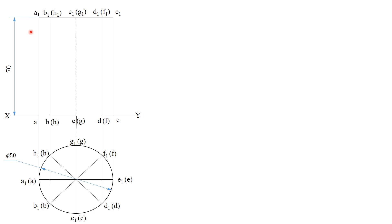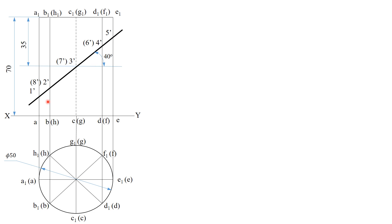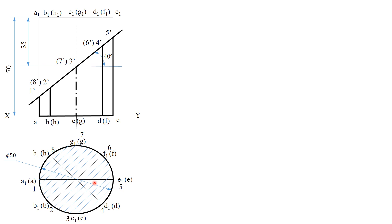Now let us proceed to the sectioning. The section plane is bisecting the axis, so it passes through the center at a height of 35 mm. At this point, draw the section plane inclined at 40 degrees to HP. Name the corresponding section points. After plotting the section points on the front view, project all these section points onto the top view to obtain the sectional top view. Highlight and hatch the sectioned area.